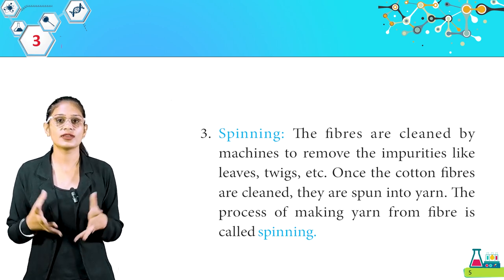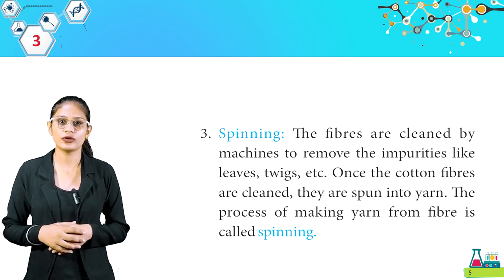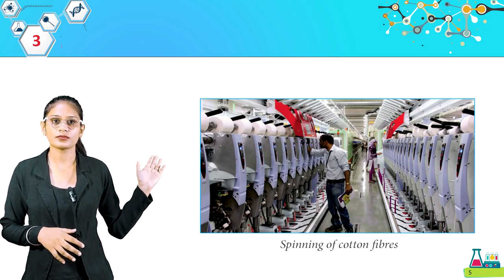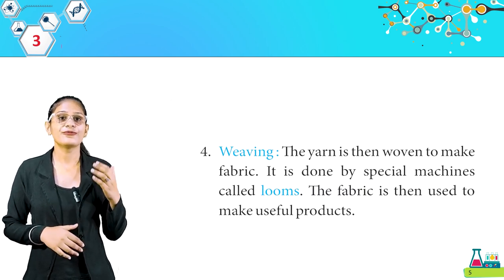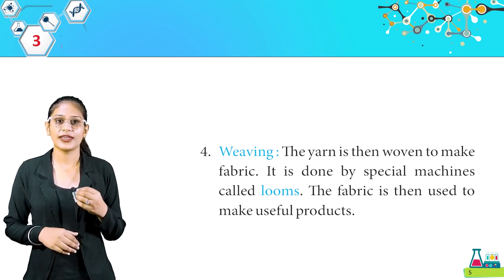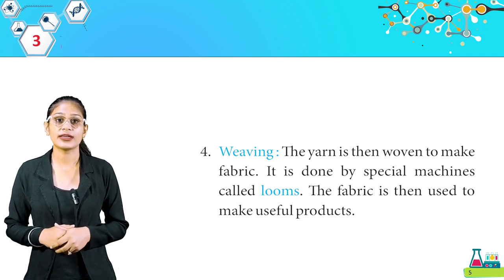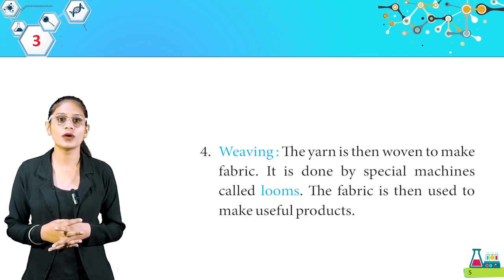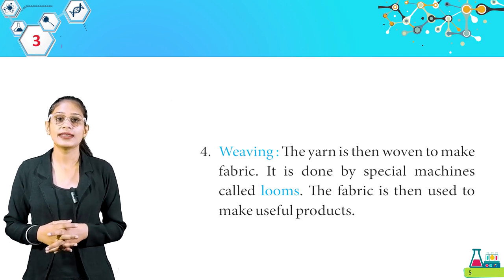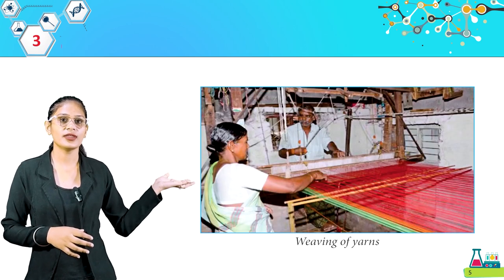Get it, students? This is the process of obtaining cotton. Look at this picture. Here is weaving. The yarn is then woven to make fabric. It is done by a special machine called a loom. The fabric is then used to make useful products.